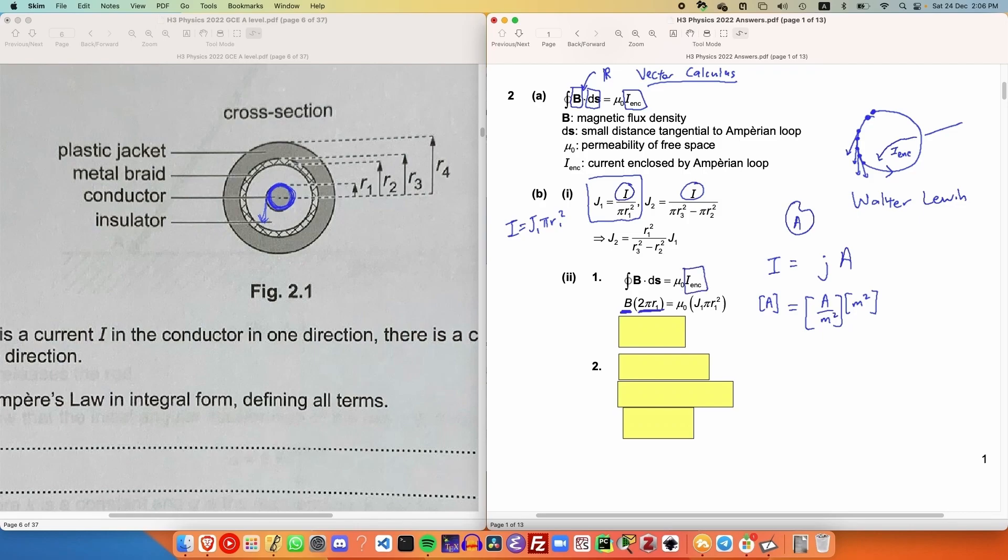For I enclosed, we need to find the amount of current that is penetrating through this Ampere loop, and that is simply the expression we had before. Since we chose the cross-sectional area to be the area within the Ampere loop, we just solve for B, and that gives us the answer.